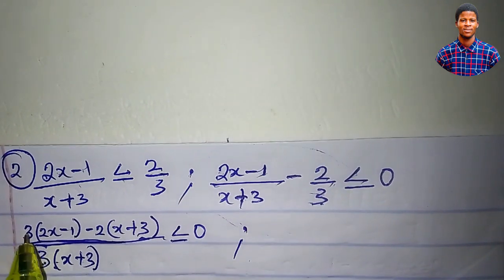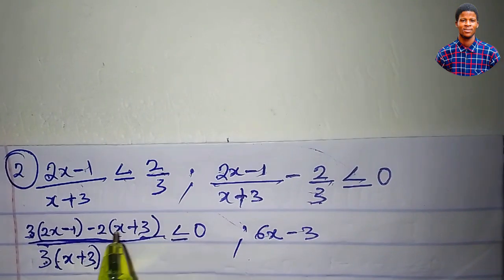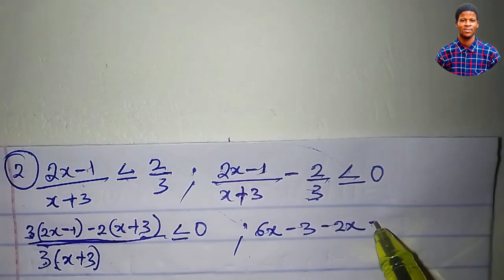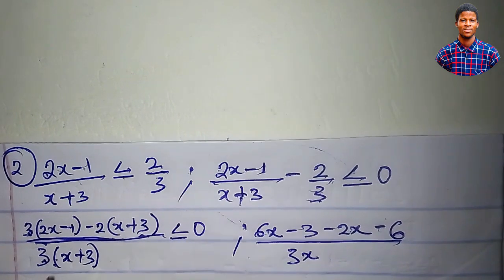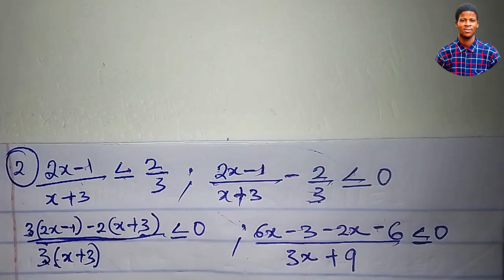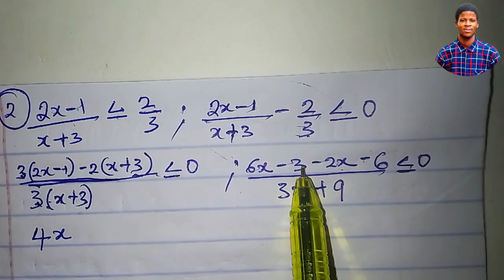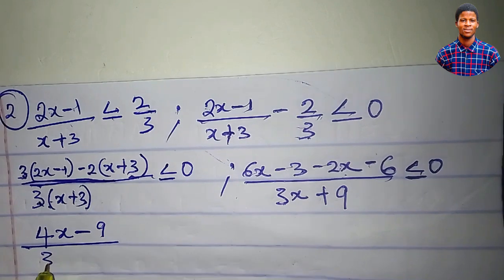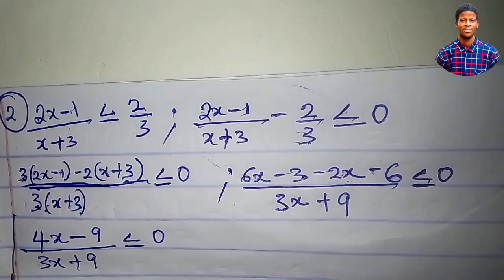Expanding: 3 times 2x is 6x; 3 times minus 1 is minus 3; minus 2 times x is minus 2x; minus 2 times 3 is minus 6. The denominator: 3 times x is 3x; 3 times 3 is 9. So the numerator is 6x minus 2x minus 3 minus 6, which simplifies to 4x minus 9. The denominator is 3x plus 9. So we have 4x minus 9, all over 3x plus 9, less than or equal to 0.